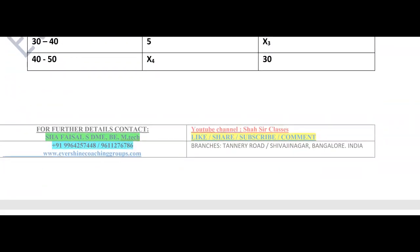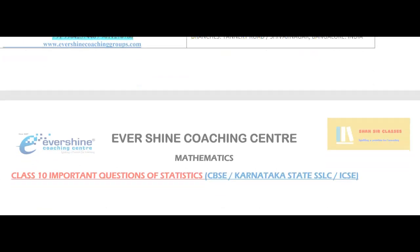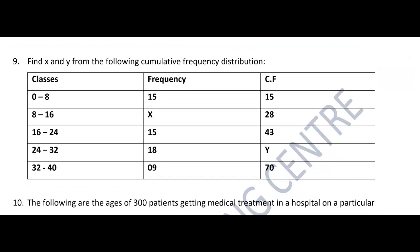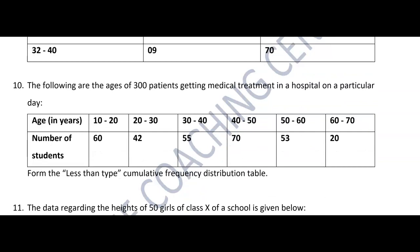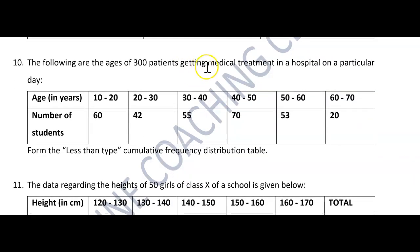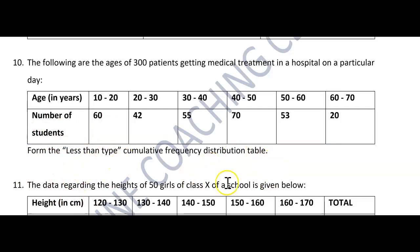I hope you all are understanding the video and the questions we are covering. Coming to Question 9: Find x and y from the following cumulative frequency distribution — they have given class interval, frequency, and cumulative frequency, and you need to find the values of x and y. Question 10: The following are the ages of 300 patients getting medical treatment in a hospital on a particular day. They are asking you to form the less-than-type cumulative frequency distribution table — not to draw the less-than-type ogive, so be careful.